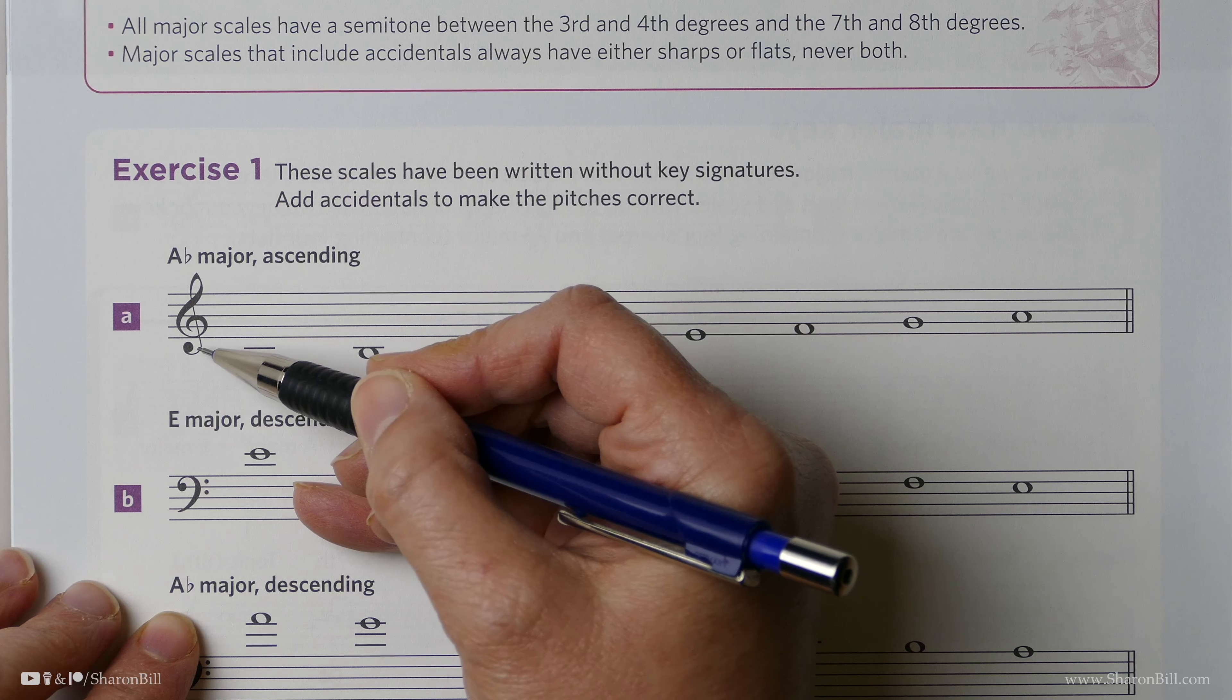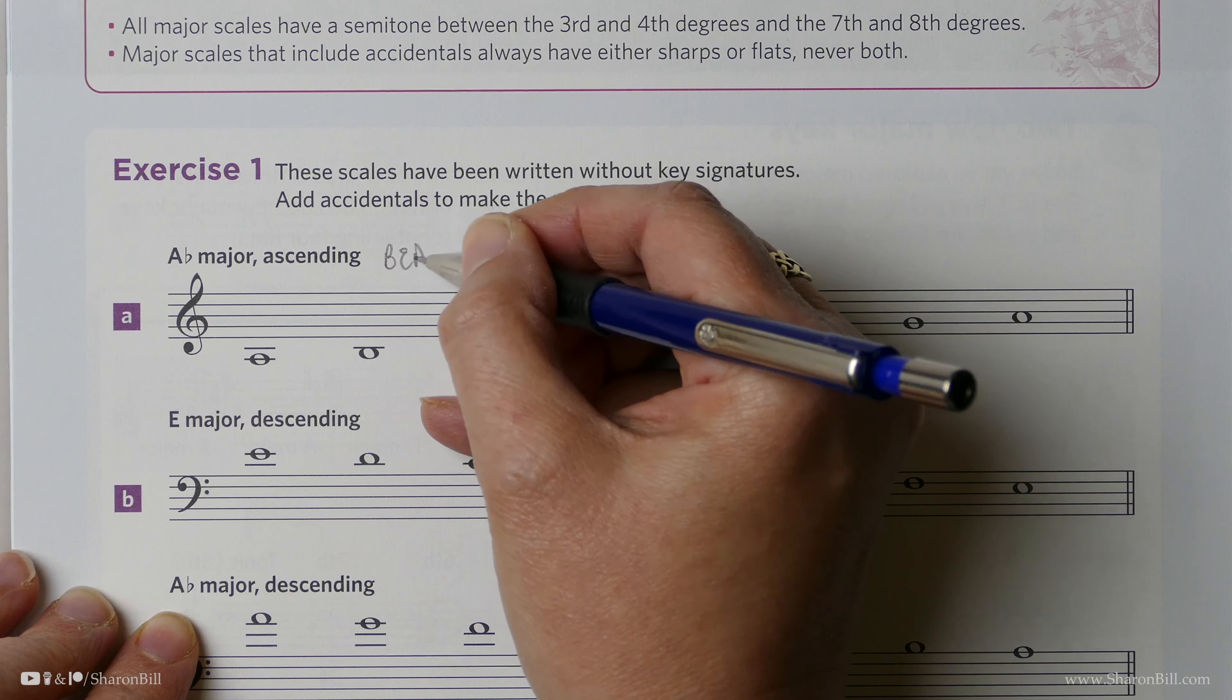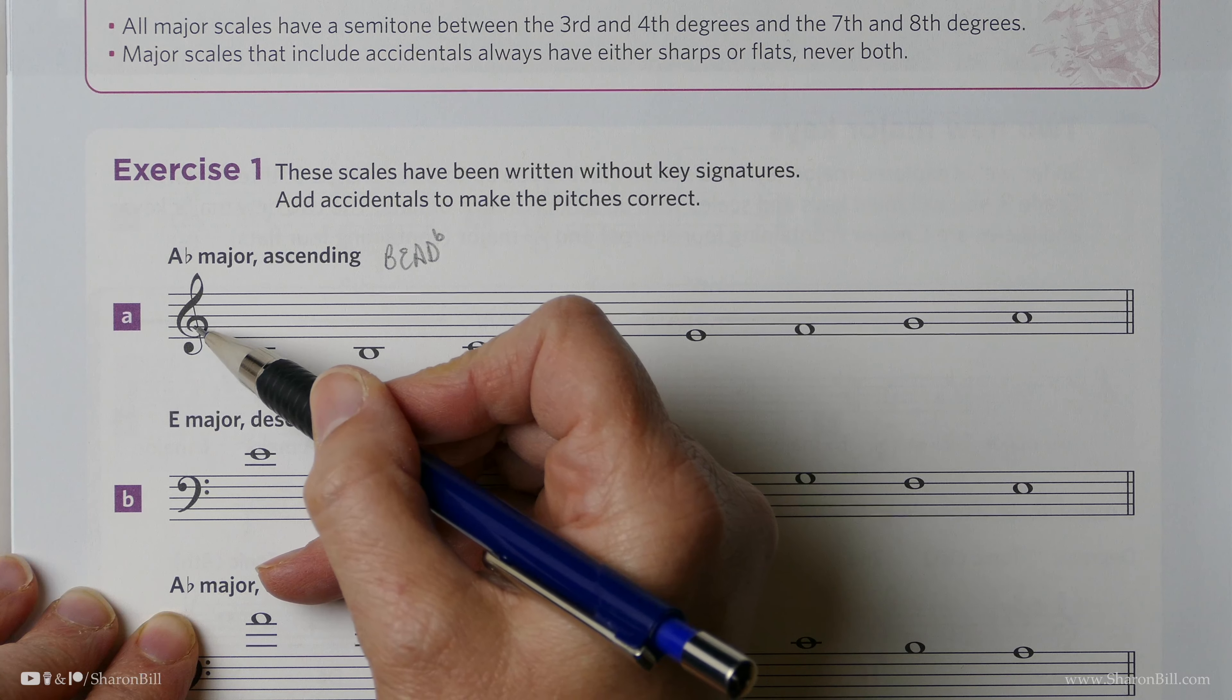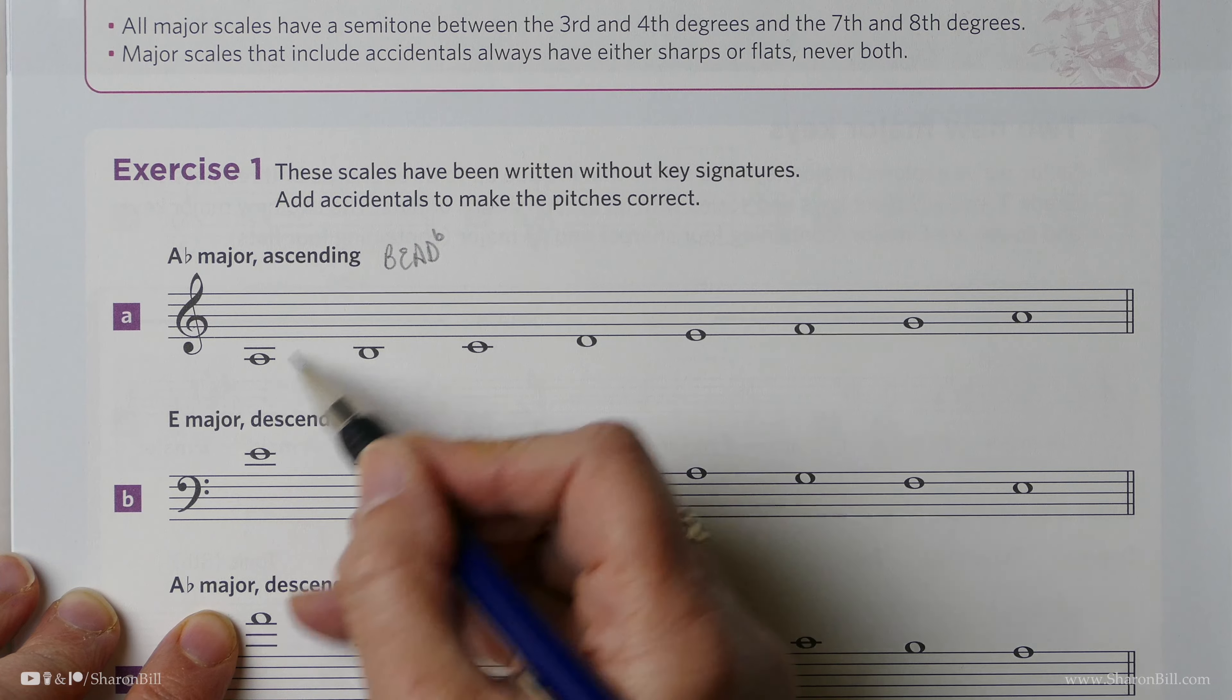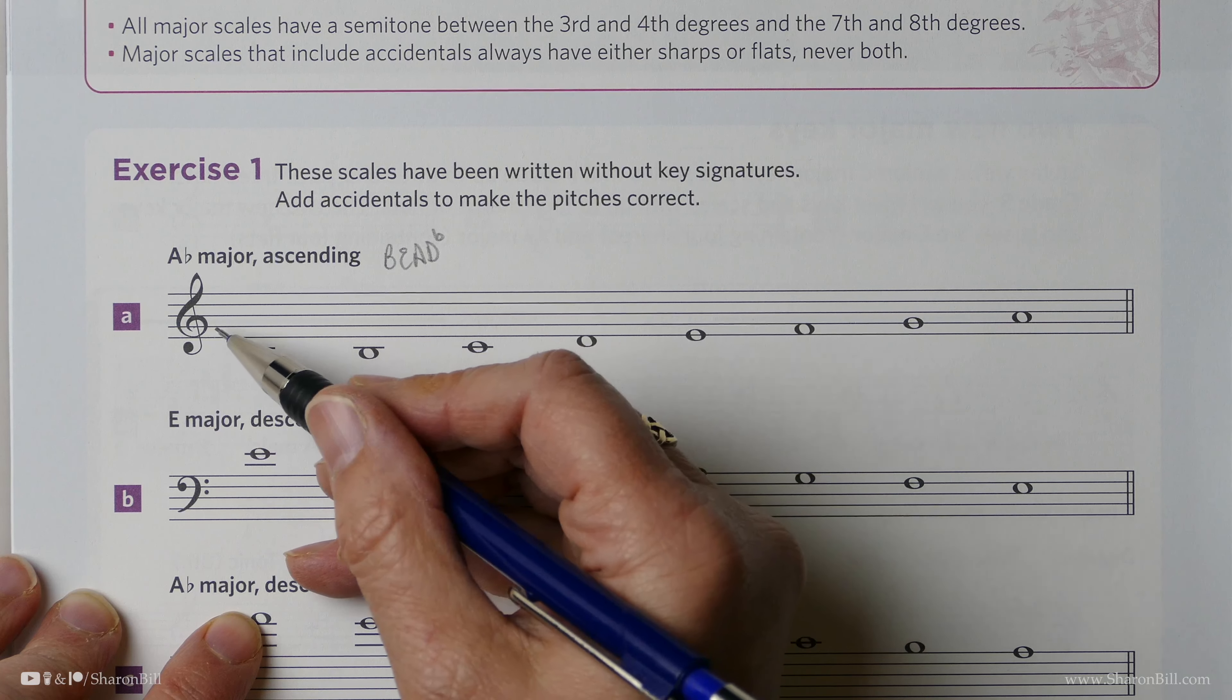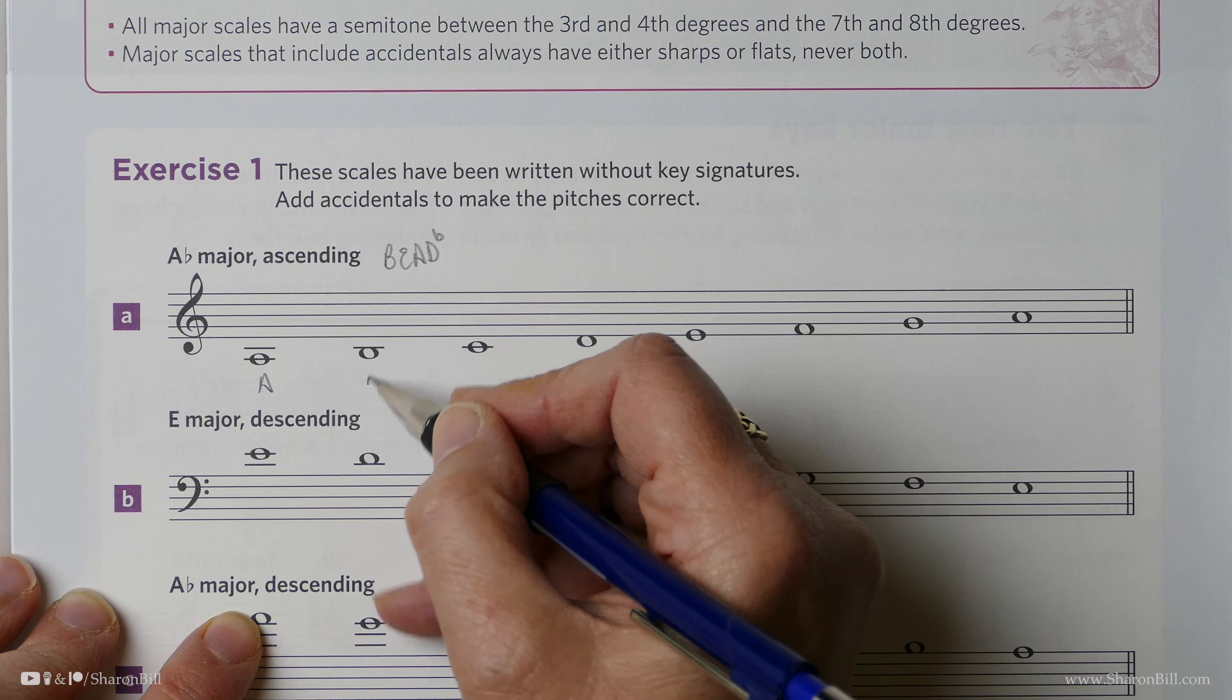Exercise 1 asks us to add accidentals to make these pitches correct. In a scale, we can either have a key signature that just does the job all in one go, or if we're asked to add accidentals, we have to apply this key signature as accidentals to any of the relevant notes. We need to know that A-flat major would have a key signature of B-flats, E-flats, A-flats, and D-flats. Now we need to add these as accidentals, so do remember that we're in the treble clef here.